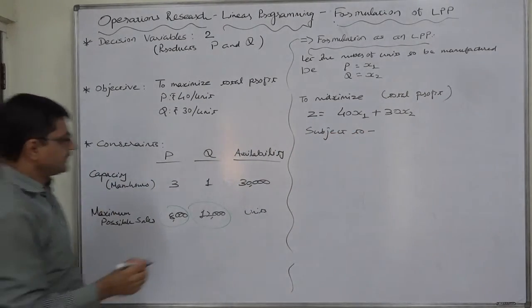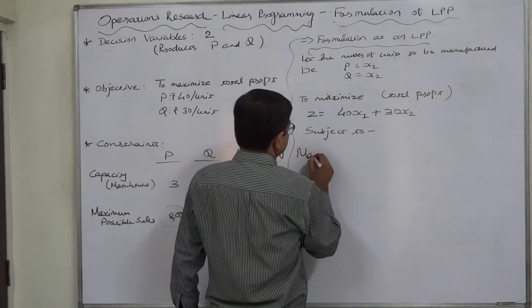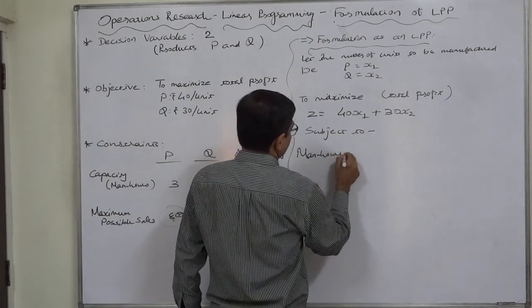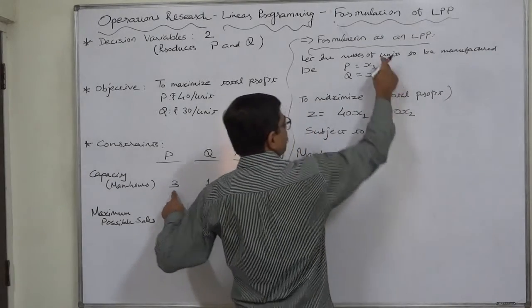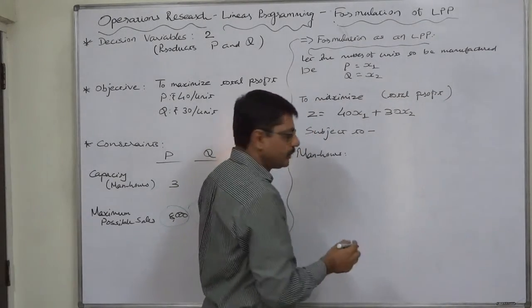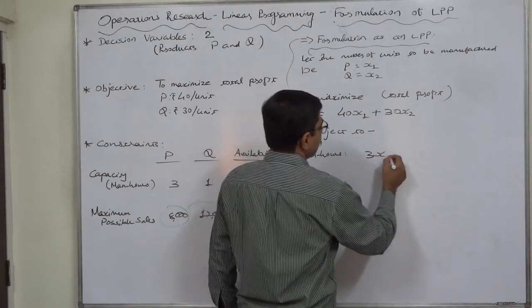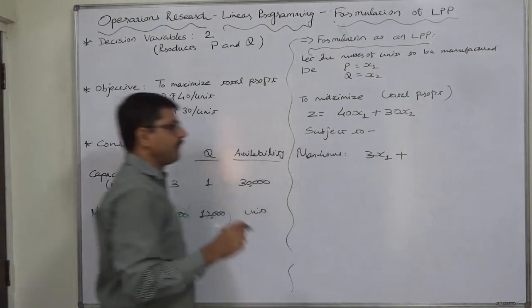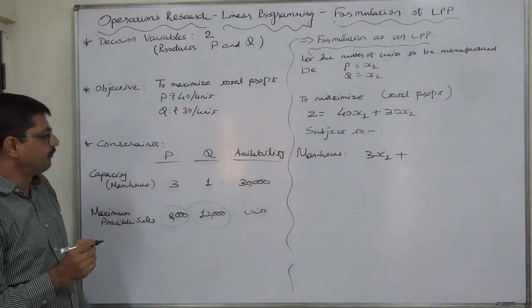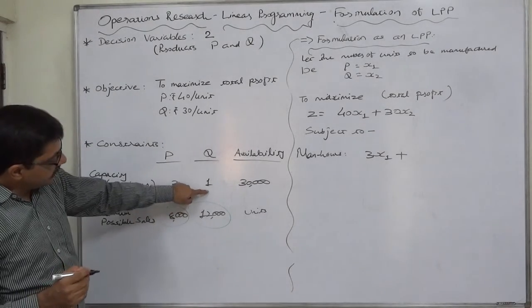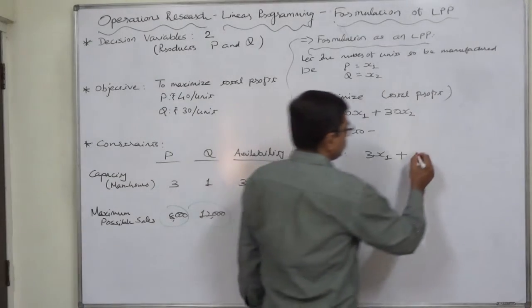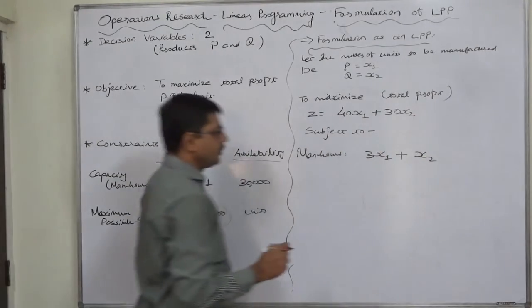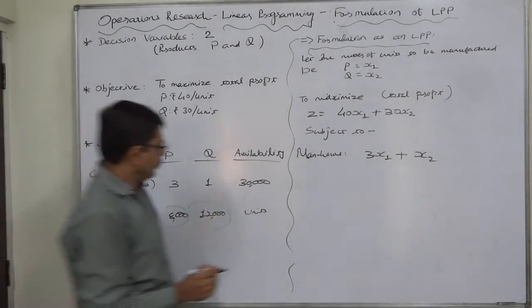The first constraint is capacity or man-hours: 3 hours per unit of P, and we know that X₁ units of P we are going to manufacture, so 3X₁ will be the total requirement of man-hours for the production of P. And 1 hour per unit of Q times X₂ number of units, so X₂ hours for total production of Q.